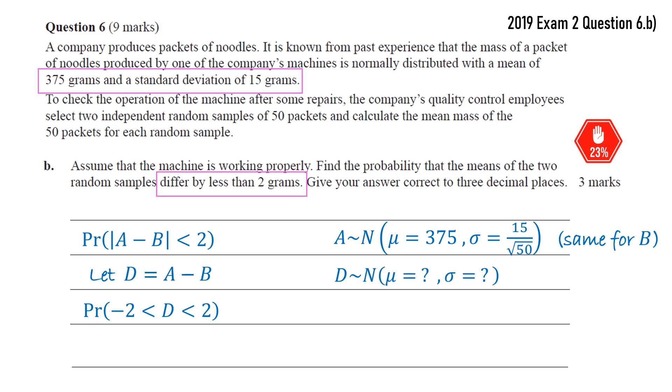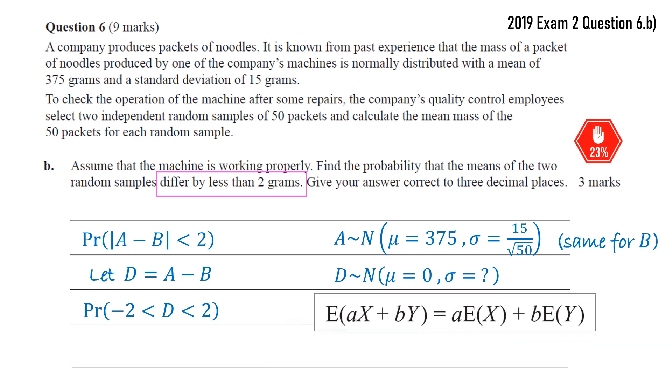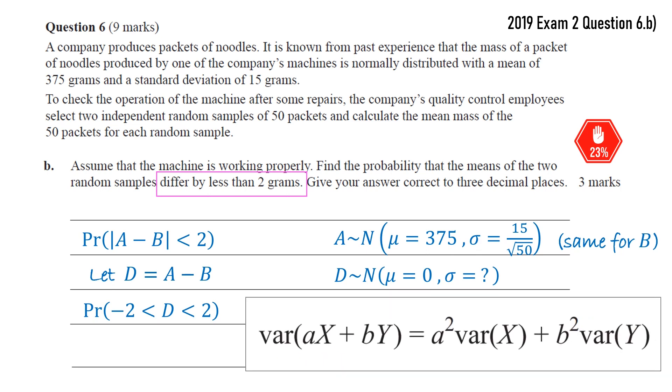Now the difference is also going to be normal because it's a linear combination of normal variables. And actually the mean is just going to be 0. That's using our formula for the expected value of a linear combination of random variables. We have here expected value of a minus b. So in that formula little a would be 1, little b would be negative 1. So it turns out we'll just have expected value of a minus expected value of b. Now those expected values are both 375 grams, so when we subtract them we just get 0.